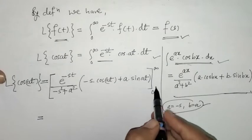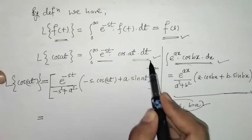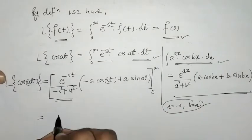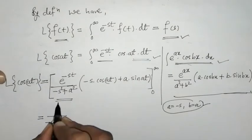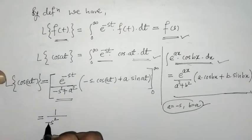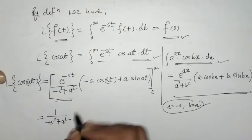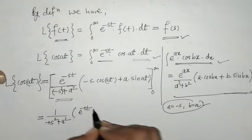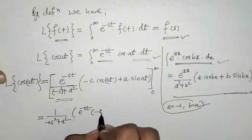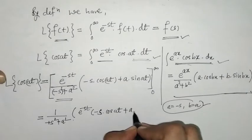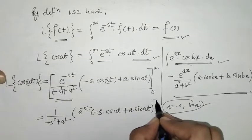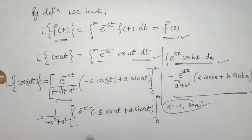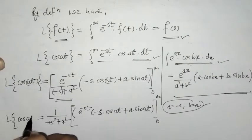Now we apply the limits. We have evaluated this integral with respect to t, so we put t from 0 to infinity. Since s is a constant, we take the factor 1/(s² + a²) outside, giving us e raised to minus s·t times (minus s·cos(at) + a·sin(at)), evaluated from 0 to infinity.